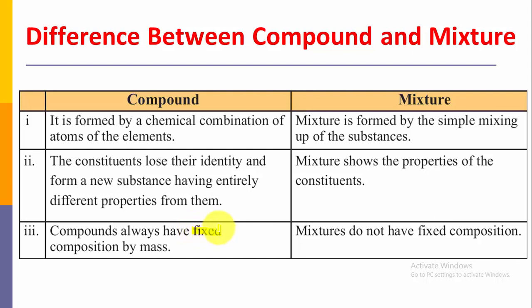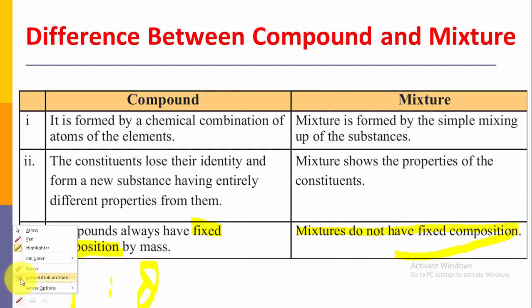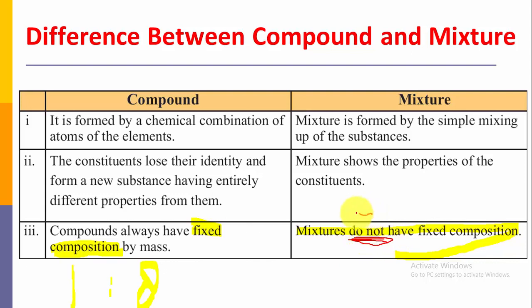The third difference: compounds always have a fixed composition by mass. For example, water always has a fixed ratio of hydrogen to oxygen of 1:8. A compound is always formed with a fixed ratio. But a mixture does not have any fixed ratio. If we put one teaspoon or one and a half teaspoons of salt into water, we still have a mixture. So mixtures do not have a fixed composition.